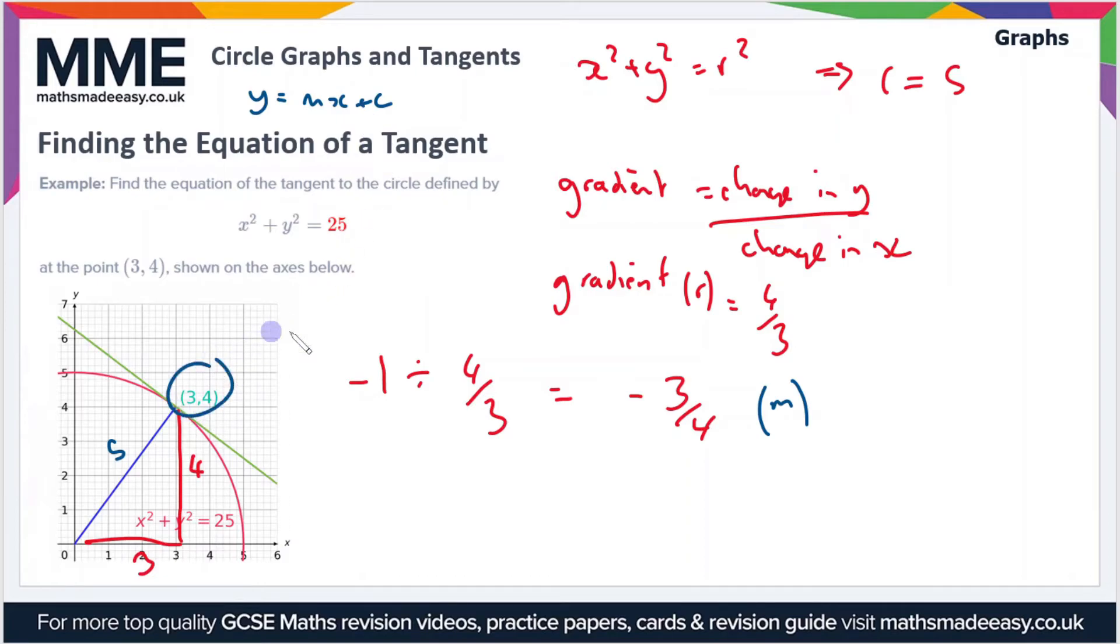Let's plug those into the equation. We have four, that's the y value, equals m, which is minus three quarters, times x, which is three, and then we add the plus c on the end. If we just work this out here, we get four equals minus nine over four plus c.